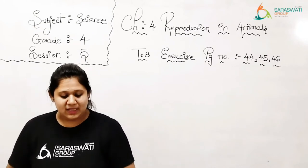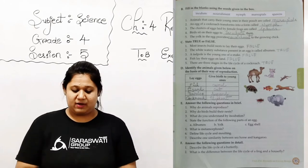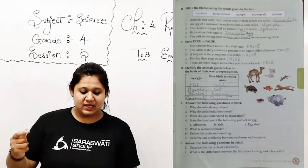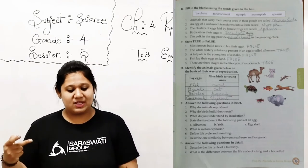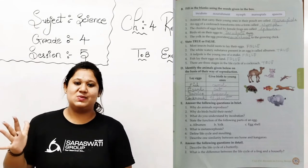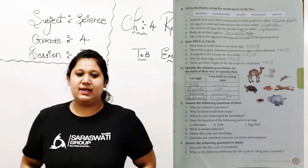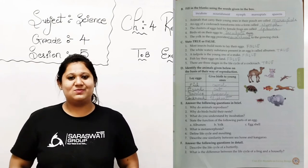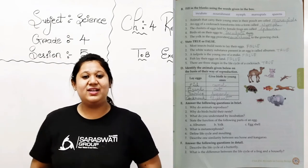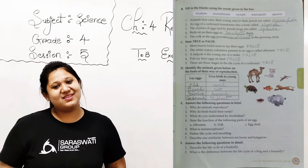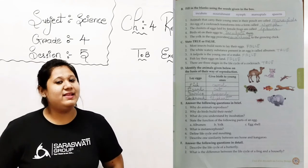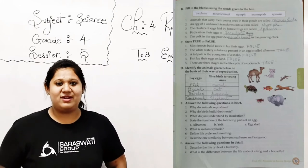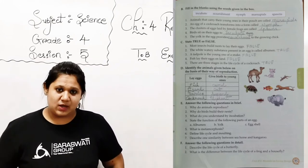Now page number 45, question number 2: fill in the blanks using the words given in the box. There are five options given there. We need to select the appropriate answer for each blank, right? Incubate, nourishment, nymph, marsupials and spawns. These are the options given there. Now blank number 1: animals that carry their young ones in their pouch are called blank. So easy, right? We are going to call them marsupials, right? So write it with pencil, marsupials. Kids, it is a little bit difficult spelling. Pronounce it well and write it well. The spelling is already given there, check it out once and write it well, okay?